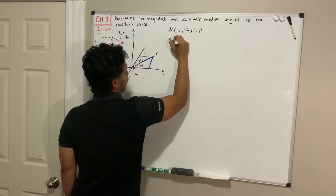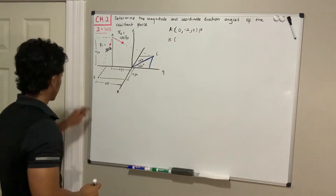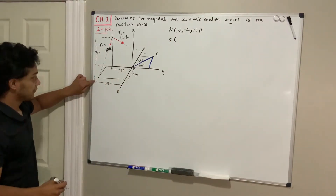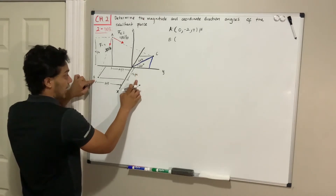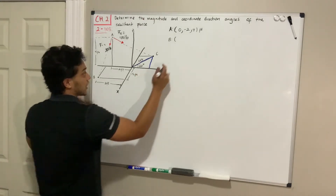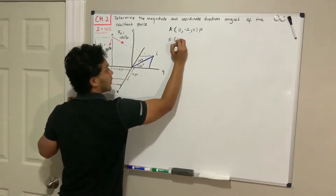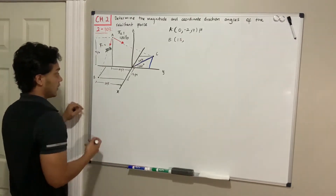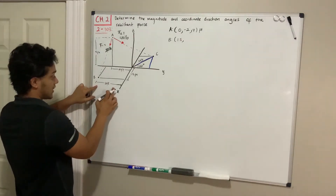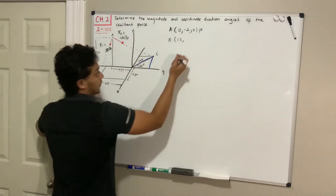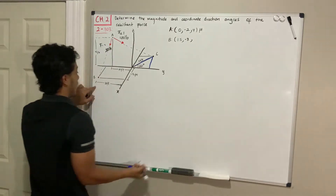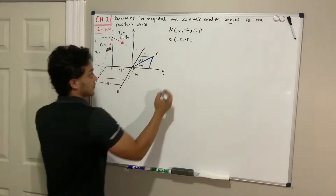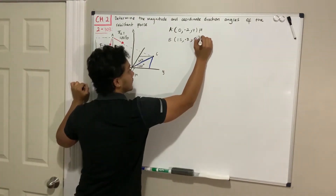For point B, we find that it has 1.5 in the x-direction, negative 3 in the y-direction, and 0 in the z-direction. So B is at (1.5, -3, 0) feet.